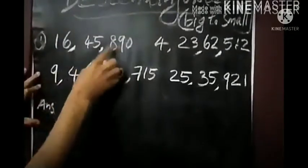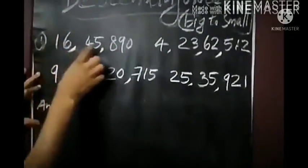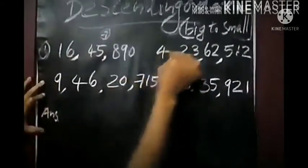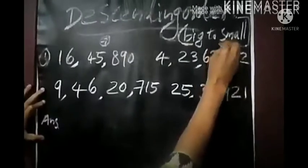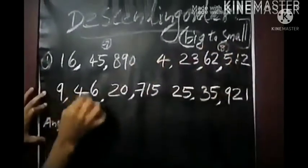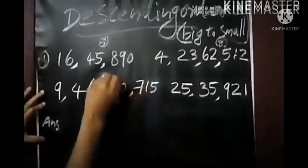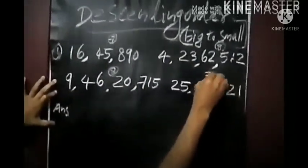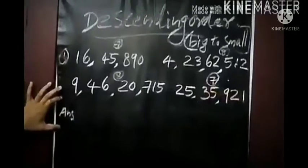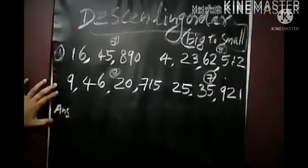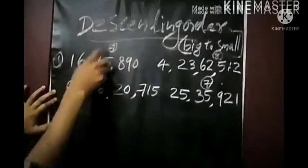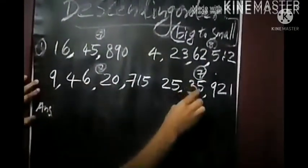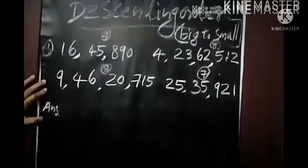Please count the digits in these numbers. The first number has 7 digits. The second number has 8 digits. The third number has 8 digits. The fourth number has 7 digits. So we have two 7-digit numbers and two 8-digit numbers. When arranging in descending order, start with the biggest number first.